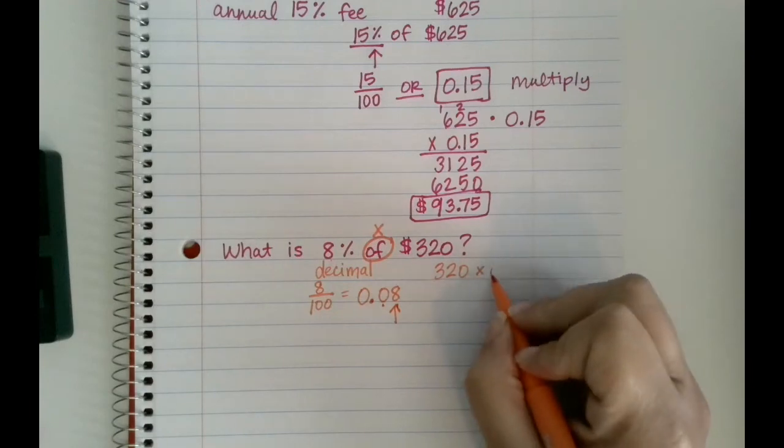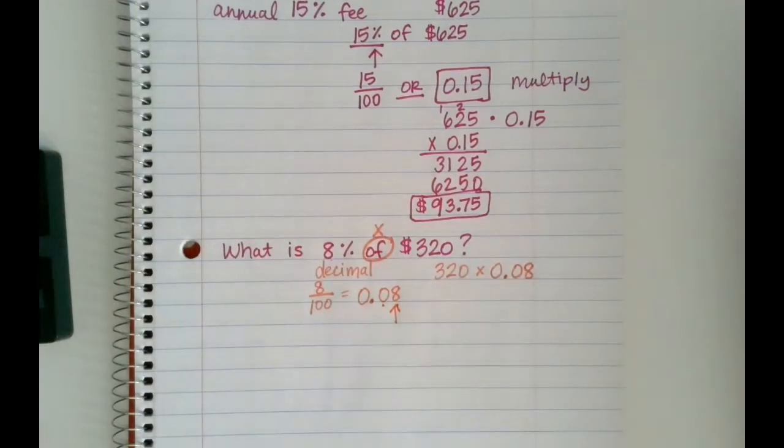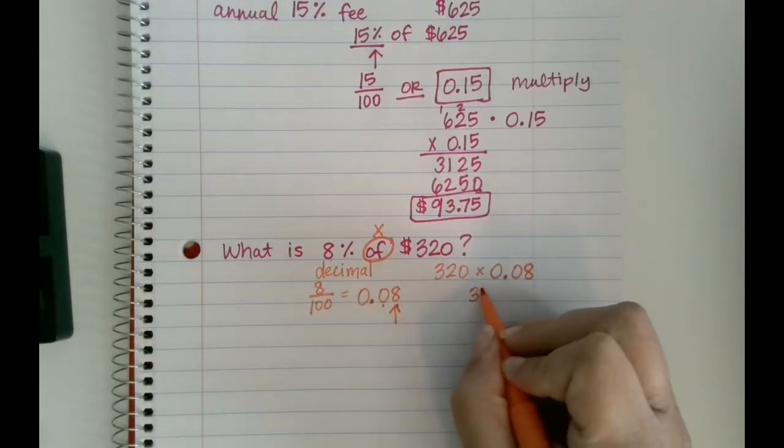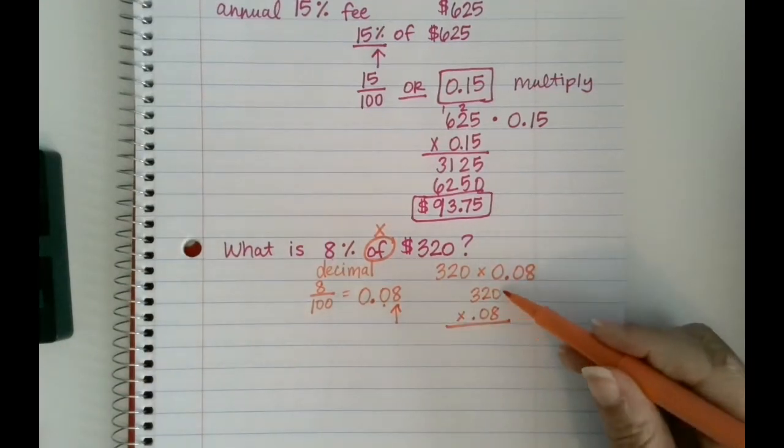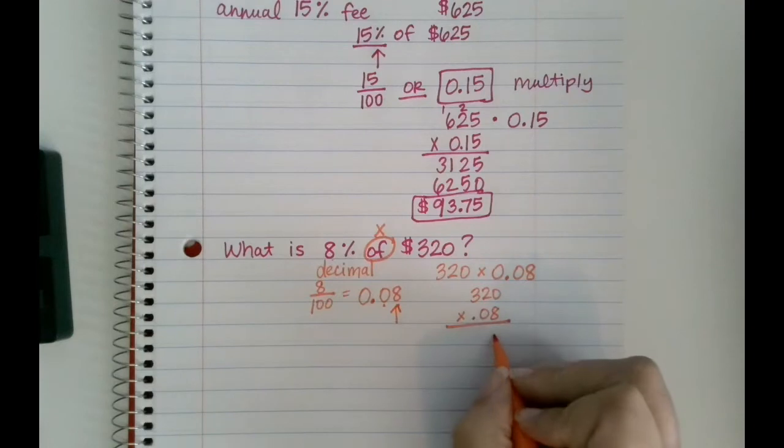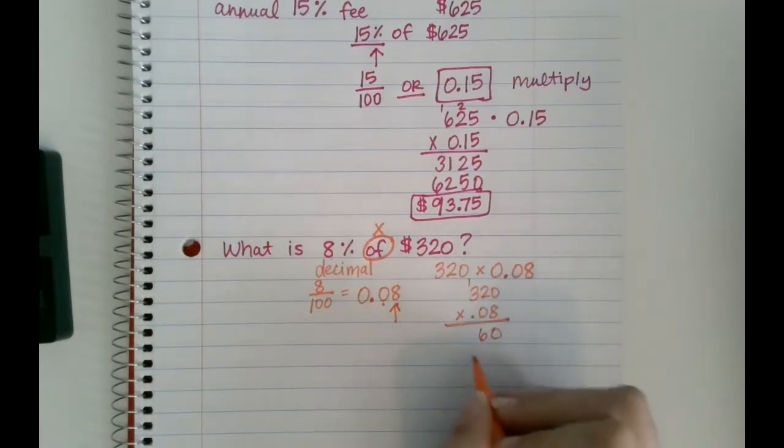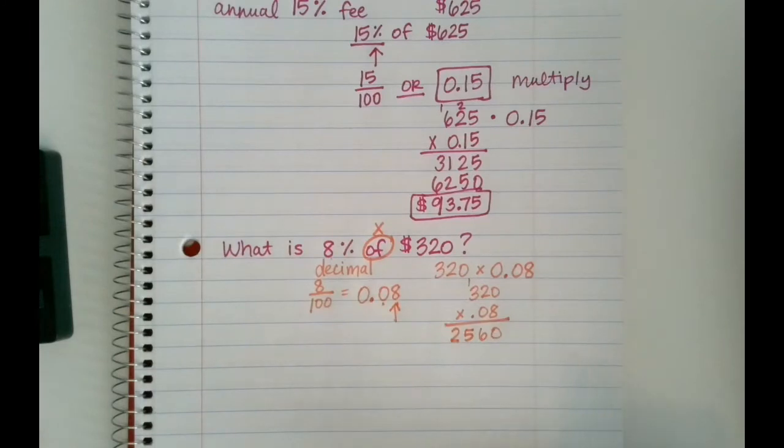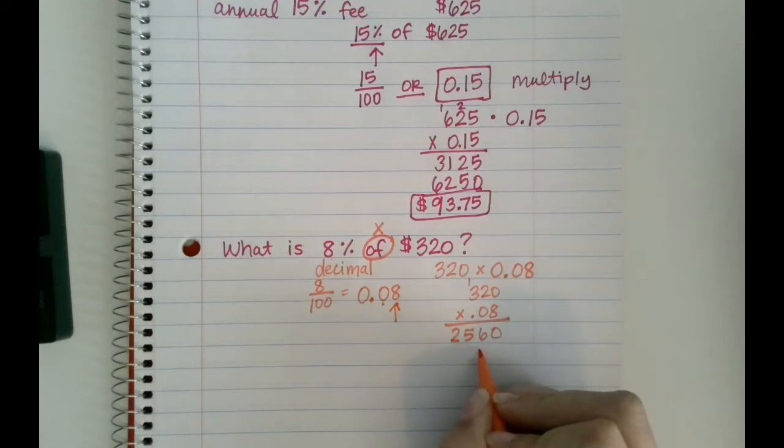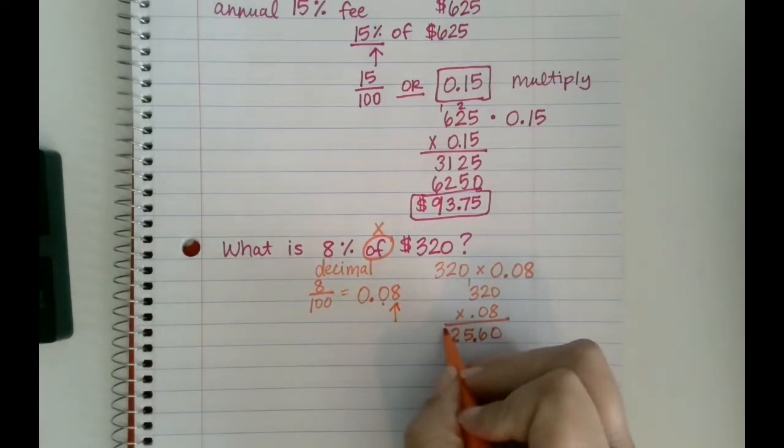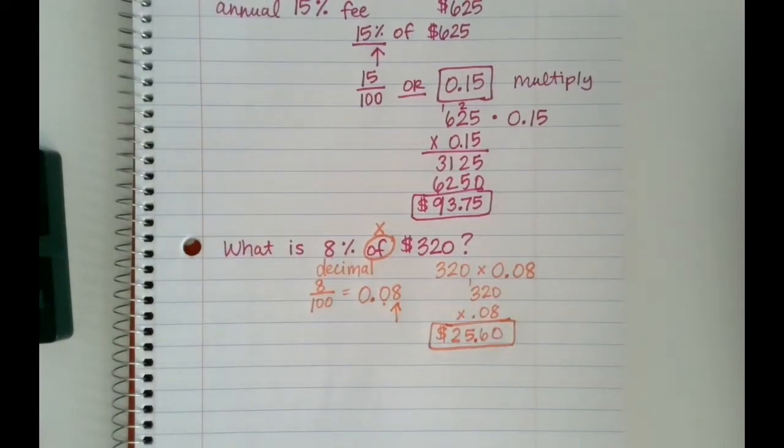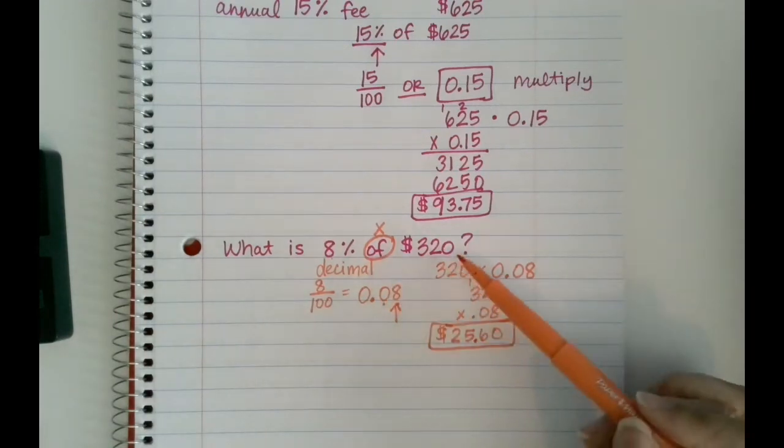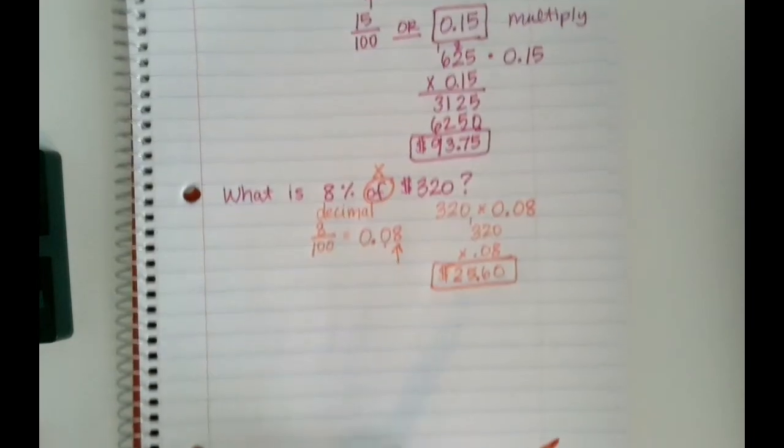So I would do $320 times 0.08. Again, I don't have to line up decimal points, I just line up my digits, so I don't have to do $320.00 - I don't have to do that. Just multiply like normal. Don't forget to go back and grab those decimal points. So there's two digits behind the decimal, one, two, so my fee would be $25.60. So 8 percent of $320 is $25.60.